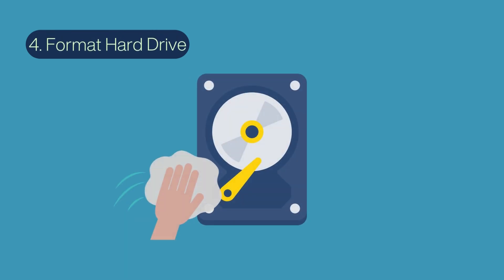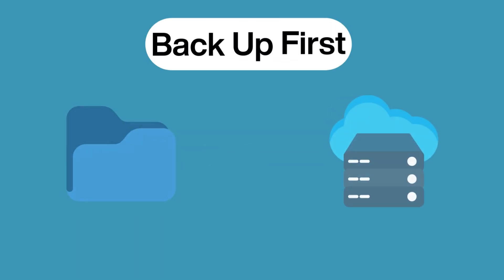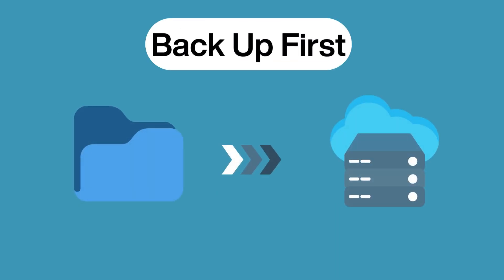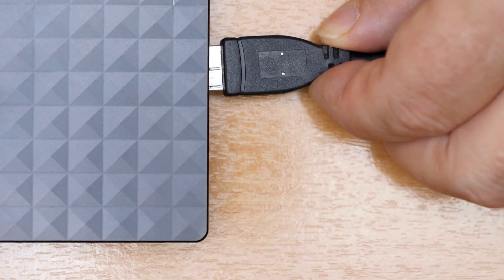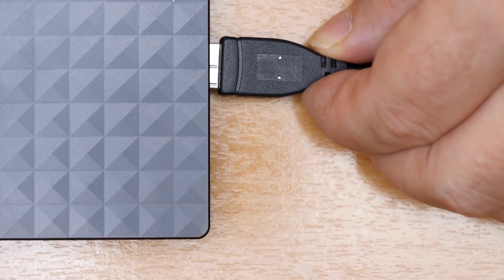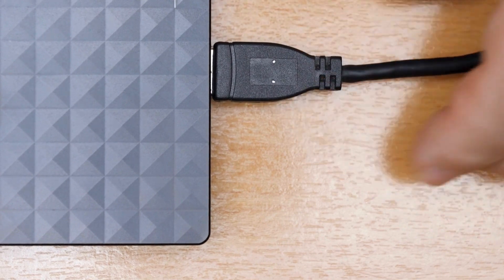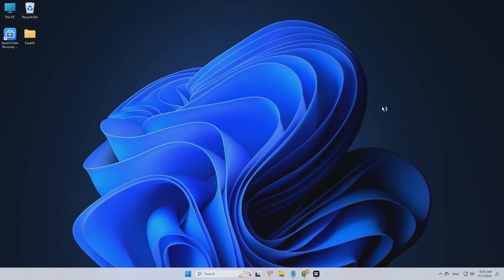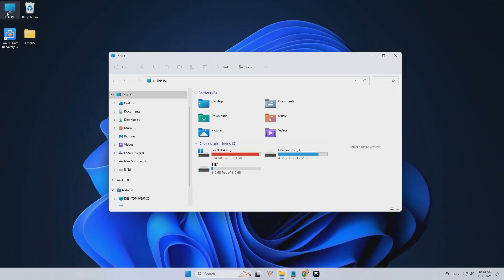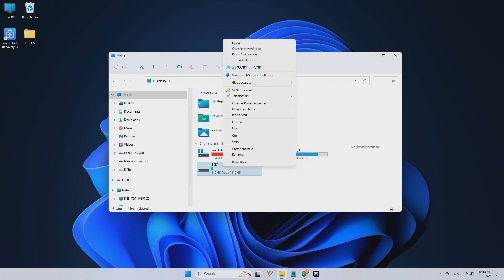Fix four: format your hard drive. The last resort is to quick-format your hard drive. Though most data can be recovered with the help of data recovery software like EaseUS Data Recovery Wizard, you should back up your files first. Step one: connect your drive to your device. Step two: open File Explorer, locate your drive, right-click on your disk, and choose 'Format' from the menu.